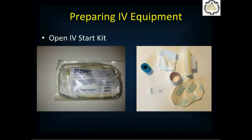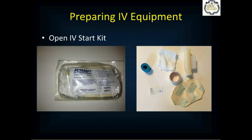Preferably you'll have an IV start kit with all the equipment ready. Inside you'll find a tourniquet, a 2x2 gauze, a small amount of tape, a tegaderm or op-site dressing to go over the IV, a label to document who started it with time and date, and a cleaning device. If you don't have an IV start kit, assemble these items yourself before beginning.